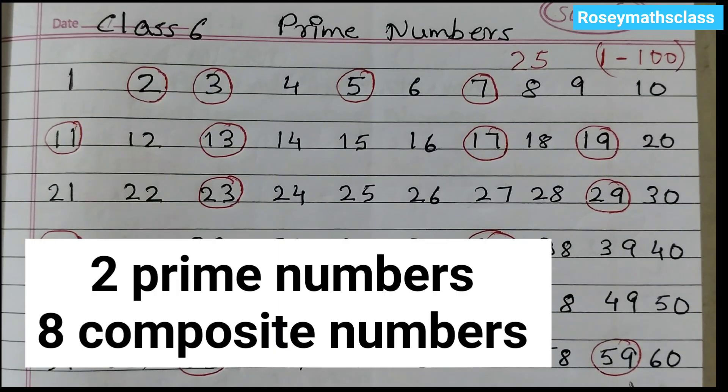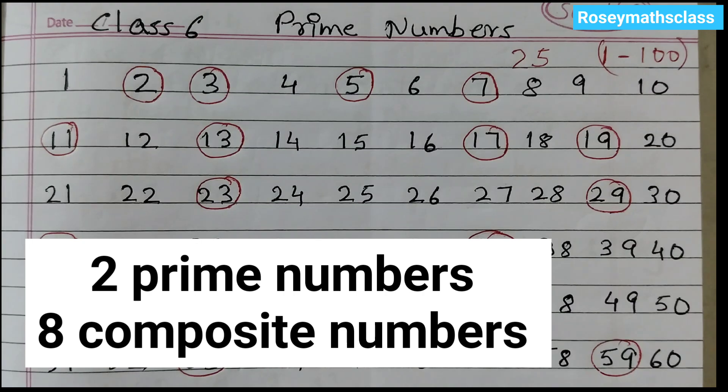2 prime numbers, 8 composite numbers. Hope that is clear to you. Thank you.